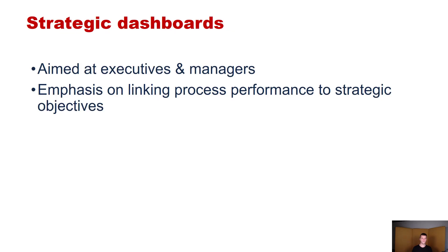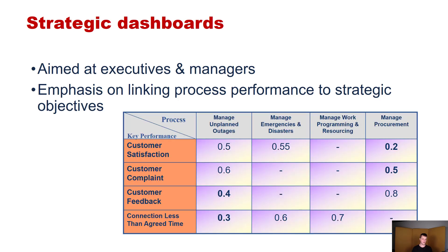The third type is strategic dashboards. Those are aimed at executives and upper management of an organization. The emphasis on strategic dashboards is on linking process performance to strategic objectives. An example would include customer satisfaction, customer complaints, customer feedback, and processes managing unplanned outages, emergencies, and disasters. You can see that the processes here are very generic — almost like areas of focus for the specific organization.